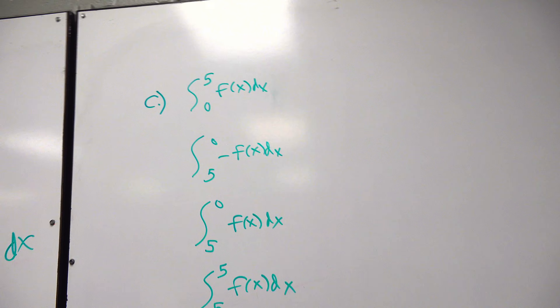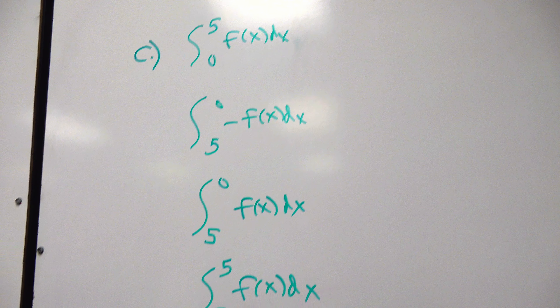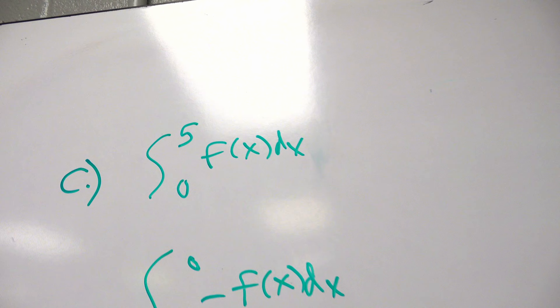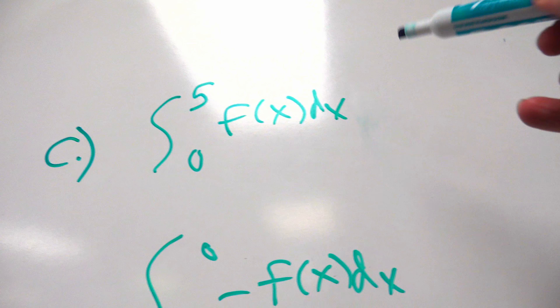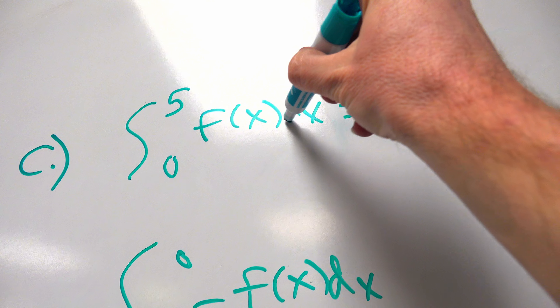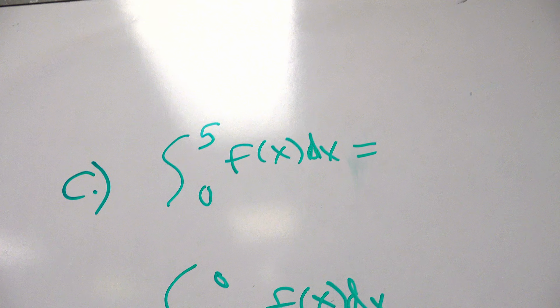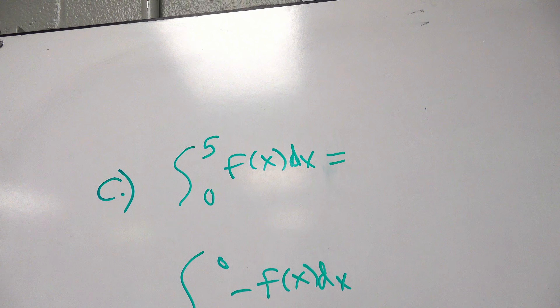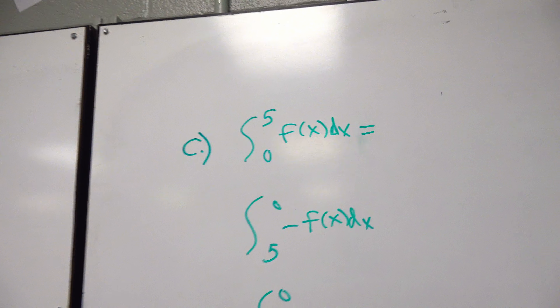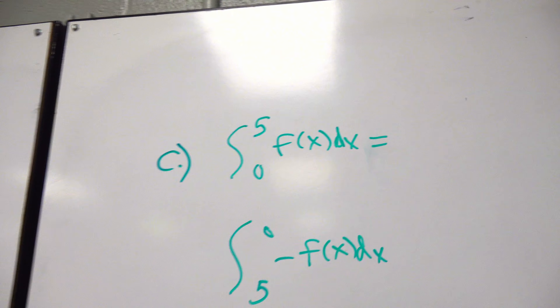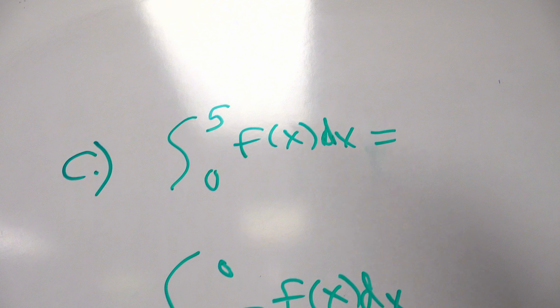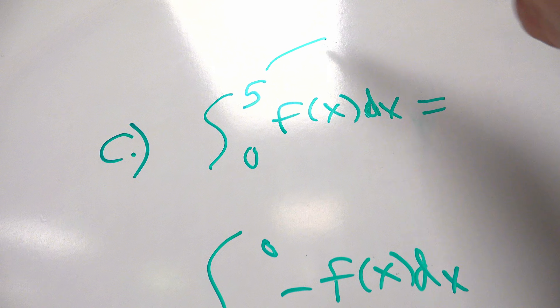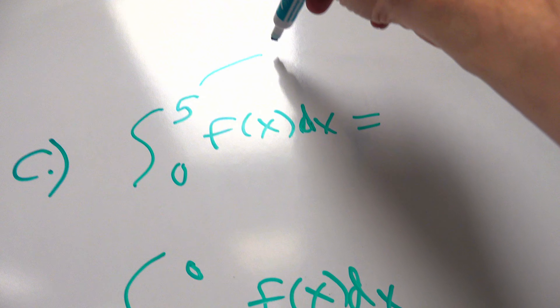Let's proceed to problem C — positive, negative, or zero? The integration from 0 to 5 of f(x) dx. Now that I told you the secret, you can think: not just the integration from 0 to 5, but the area from 0 to 5, because that's what it really is. Is 0 to 5 left to right? Yes — zero comes before five in our numeric system, so 0 to 5 is correct.